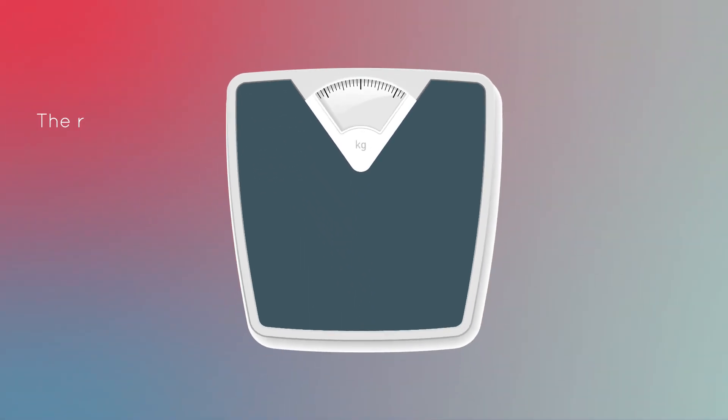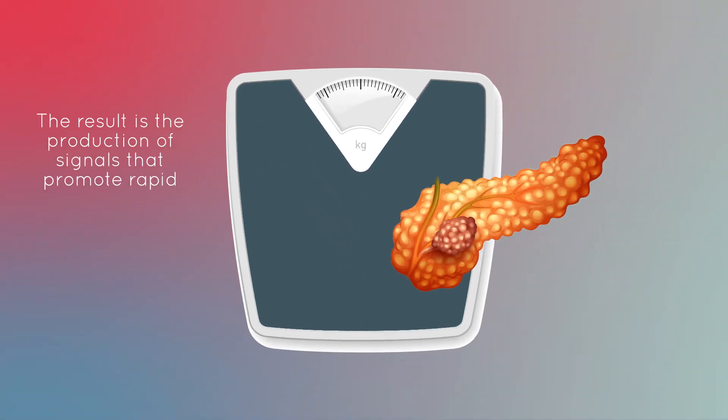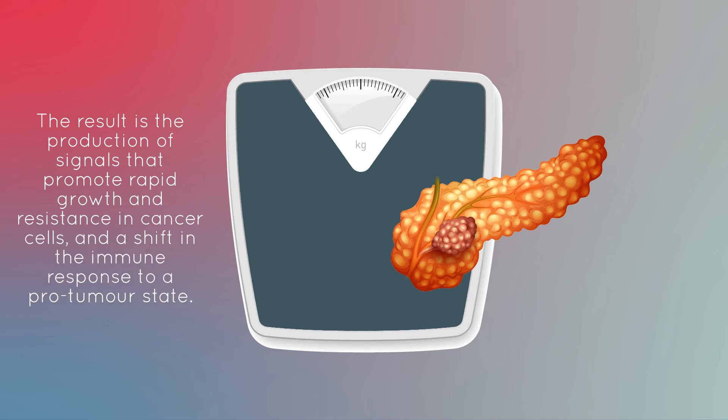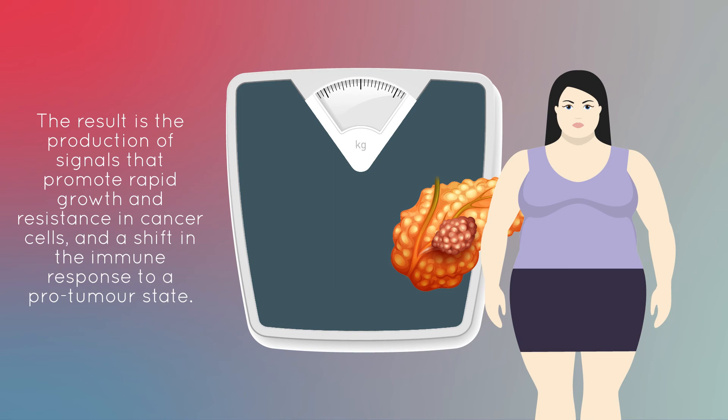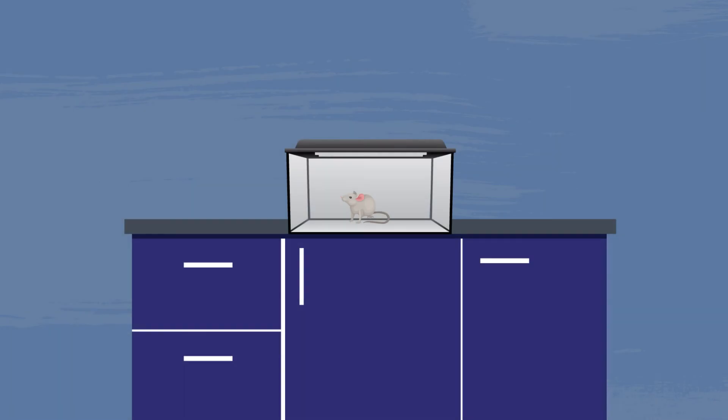The result is the production of signals that promote rapid growth and resistance in cancer cells and a shift in the immune response to a pro-tumor state. In other words, obesity creates a much more favorable environment for cancer cells to survive and spread.